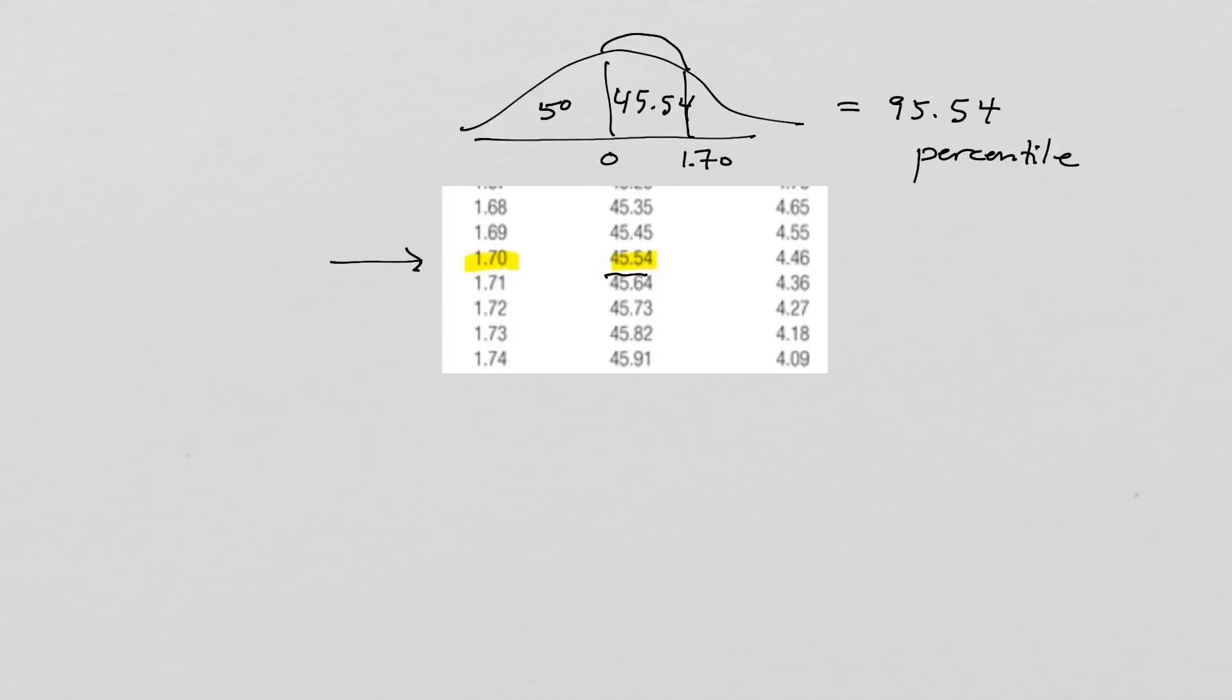I find it really helpful to always draw this little image so that I can keep track of where I am. Percentiles begin down here and go all the way up, so we have to add in everything below our z-score—that 45.54% and the 50% below the mean.